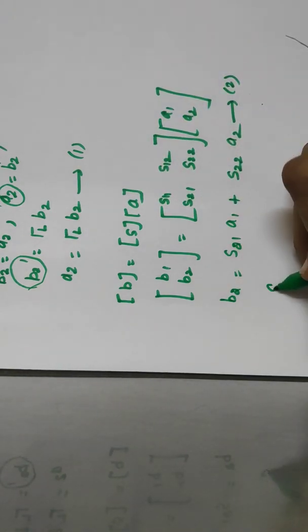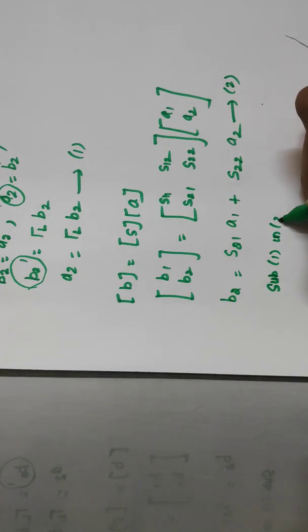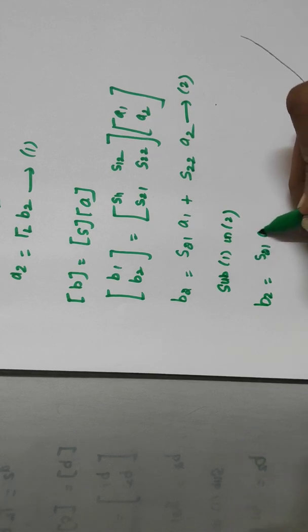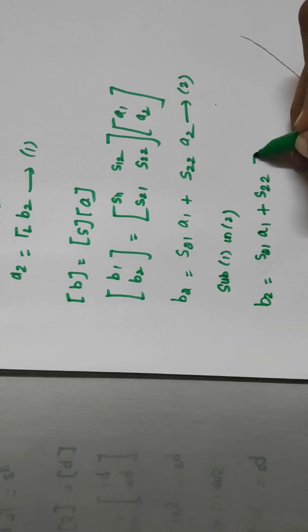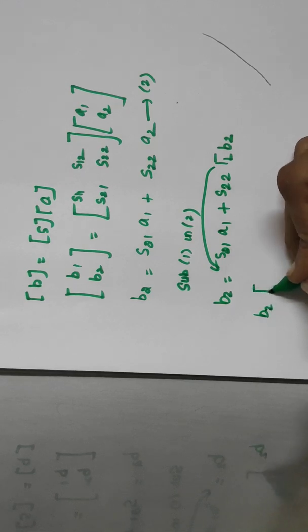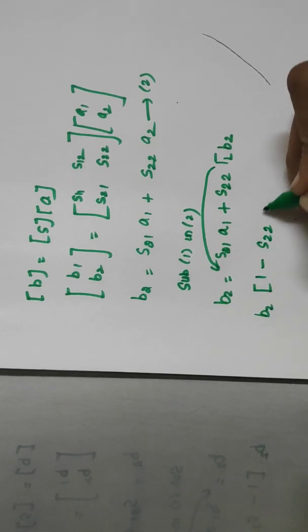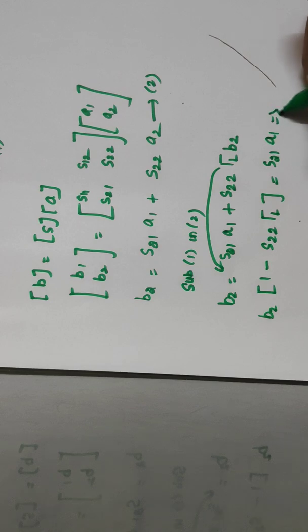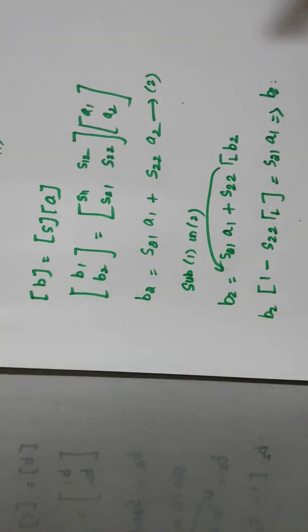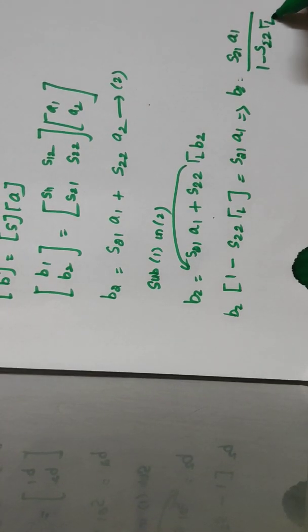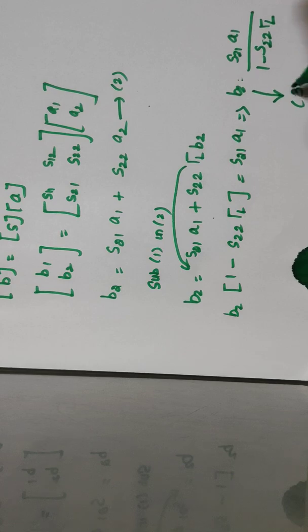Substituting equation 1 into equation 2: B2 = S21·A1 + S22·ΓL·B2. Bringing all B2 terms to one side: B2·(1 - S22·ΓL) = S21·A1. Therefore, B2 = S21·A1 / (1 - S22·ΓL). Let this be equation number 3.